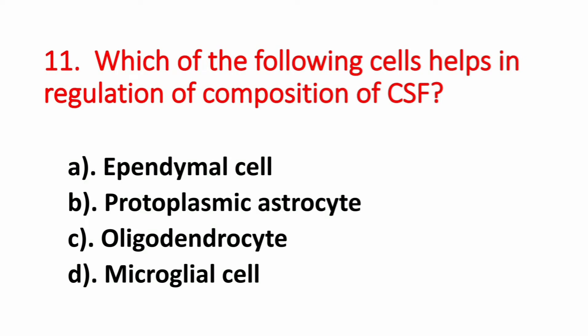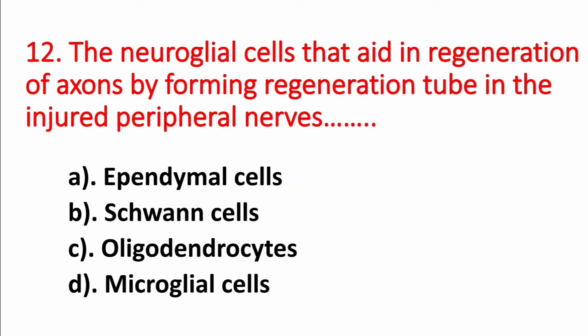Question number 11. Which of the following cells helps in regulation of composition of CSF? Option A: Ependymal cell. Option B: Protoplasmic astrocyte. Option C: Oligodendrocyte. Option D: Microglial cell. The answer is Option A, Ependymal cell.